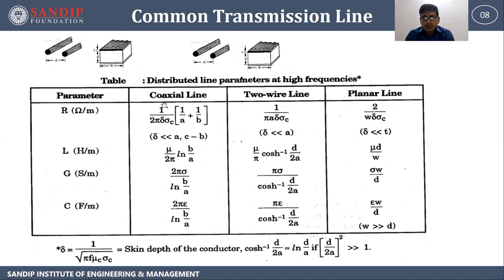Common transmission line parameters — Resistance: for coaxial line, R = (1/2π δ σ_c)(1/a + 1/b); for parallel line, R = 2/(ω δ σ_c). Inductance: for coaxial line, L = (μ/2π) ln(b/a); for two-wire line, L = (μ/π) cosh⁻¹(d/2a); for parallel line, L = μd/ω. Conductance G: for coaxial line, G = 2π σ / ln(b/a); for two-wire line, G = π σ / cosh⁻¹(d/2a); for parallel line, G = σw/d.